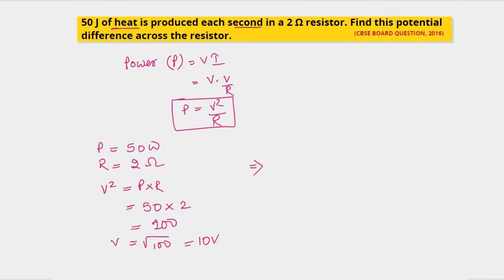From this we know that the potential difference V across the resistor is 10 volt. I hope you have understood this solution. Thanks for watching. Bye.